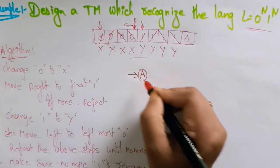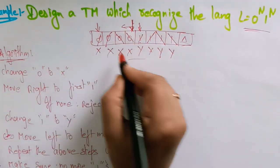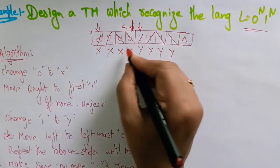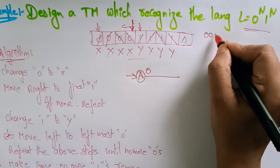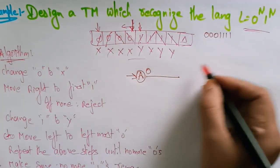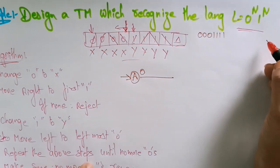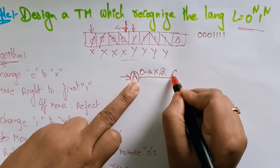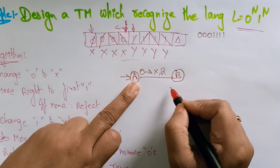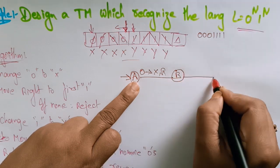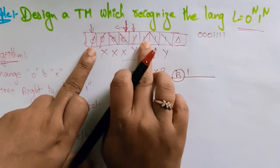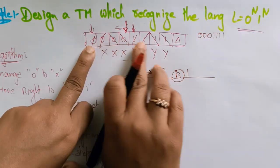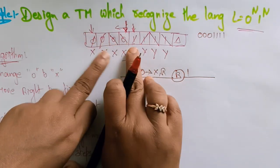Now let me draw the Turing machine diagram. First, take state A. In state A, when reading 0, the 0 is replaced with x and the head moves to the right — this is for the string 0^n 1^n. The machine then goes to state B. In state B, I move to the right and came to the first 1, because whenever you change the state you have to move from 0 toward 1, not back to 0.